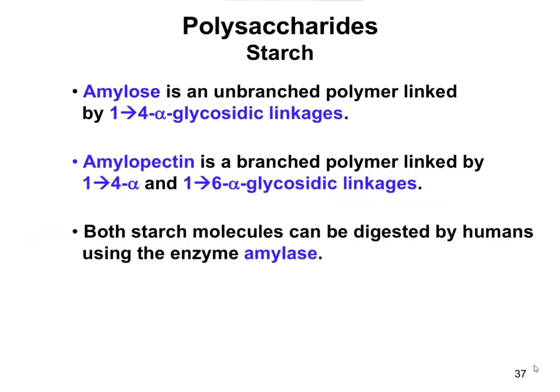Amylose and amylopectin are very similar — their glucoses are linked repeatedly through alpha-1 to 4 glycosidic linkages. Amylopectin is the branched one, and as humans, we can break down both of these.